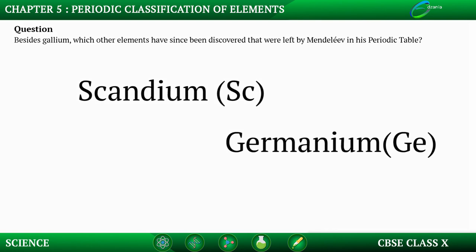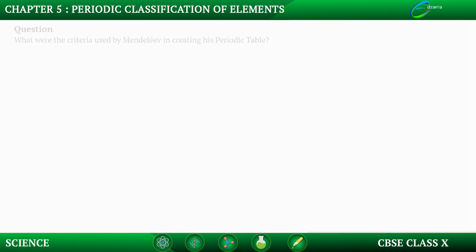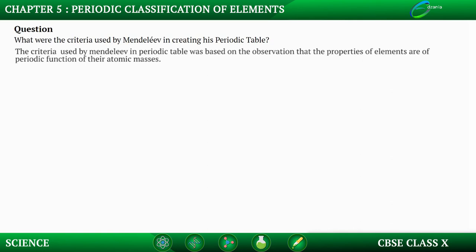Question: What were the criteria used by Mendeleev in creating his periodic table? The criteria was based on the observation that the properties of elements are a periodic function of their atomic masses — meaning if elements are arranged in increasing order of atomic masses, their properties repeat after regular intervals.